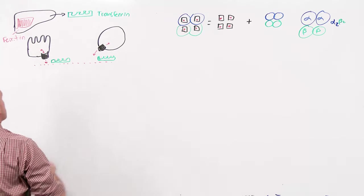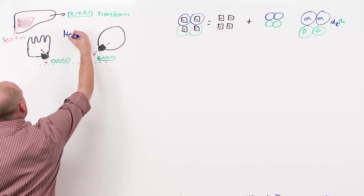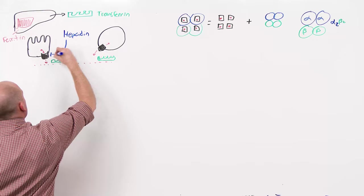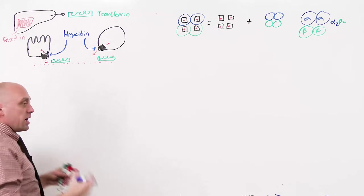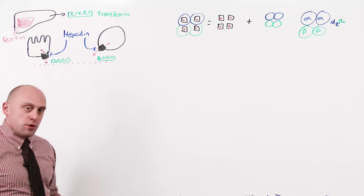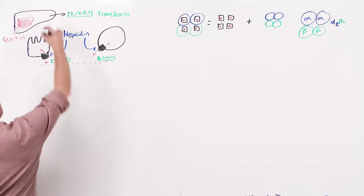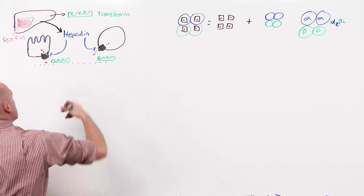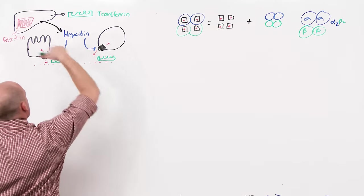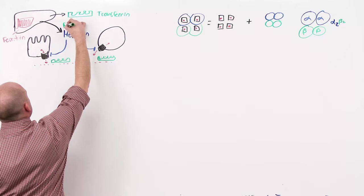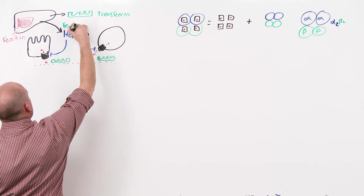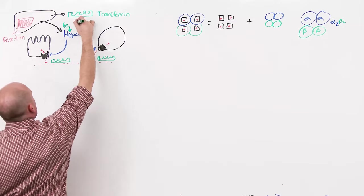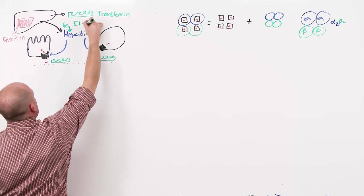Regulation is at the level of hepcidin. Hepcidin, when secreted, inhibits the action of ferroportin and keeps iron from entering the bloodstream. The liver synthesizes hepcidin. The things that increase hepcidin's production, that inhibits iron entering the bloodstream, is the presence of iron. Iron stimulates hepcidin and inhibits iron entry. The other thing that does that is inflammation, via interleukin-6.